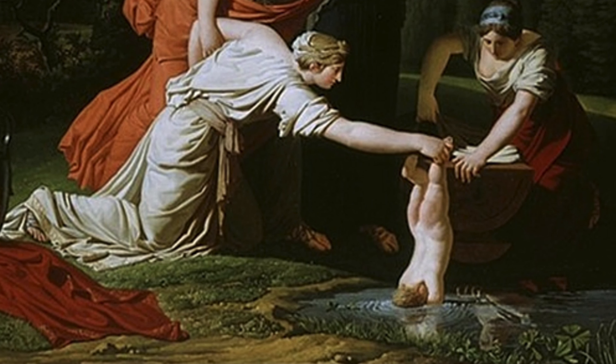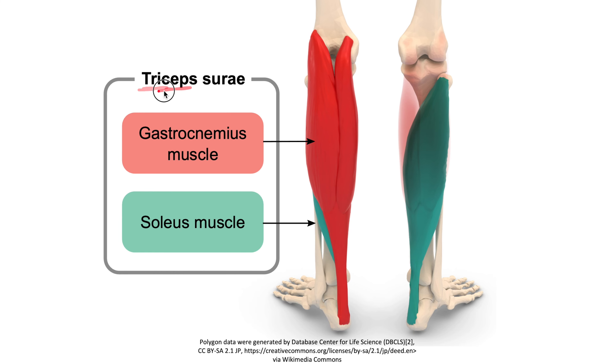This is why the calcaneal tendon is also known as the Achilles tendon. The triceps surae is made up of the gastrocnemius — which has two heads, the medial and the lateral — as well as the soleus muscle, which is underneath the gastrocnemius. Both muscles insert at the calcaneal tendon to the calcaneus. So there are three muscle heads inserting into the calcaneal tendon in the calf region — that's where tri (three), ceps (head), and surae (sural region) come from.